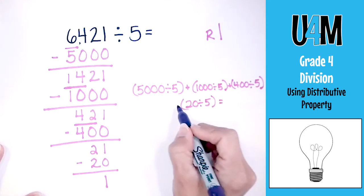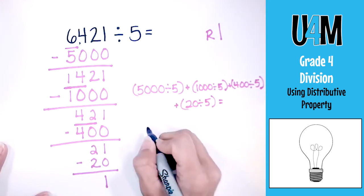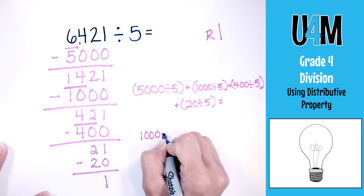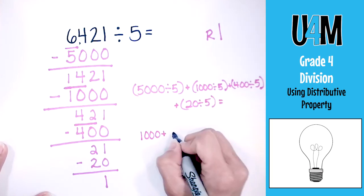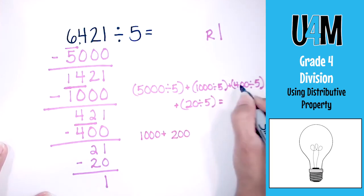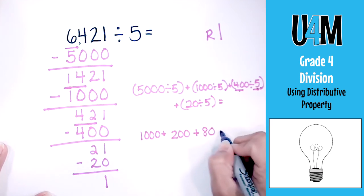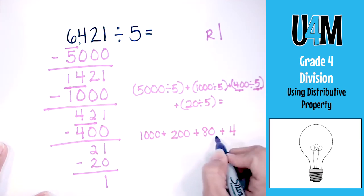We're going to add those all together at the end. So 5000 divided by 5 is 1000. 1000 divided by 5 is 200. 400 divided by 5 - remember, look at the basic facts: 40 divided by 5 is 8 and add one zero - 80. And 20 divided by 5 is 4. Now add all these together: 1284.